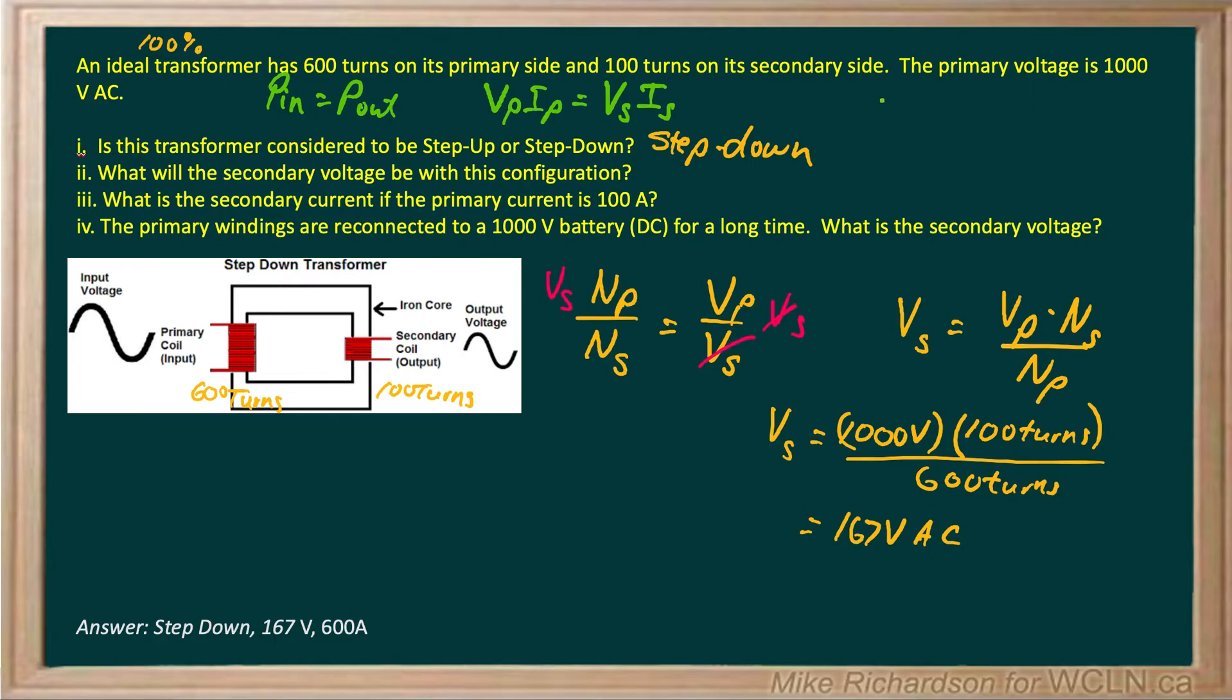Now if I get all my I's on one side and all my V's on the other, I get this equation. The voltage in the primary divided by the voltage in the secondary is equal to the current in the secondary divided by the current in the primary. And remember this is the same thing as our number of windings, our ratio of windings. So for part three we can write the ratio of the windings. Vp over Vs is the same thing as the ratio of the windings which we have.